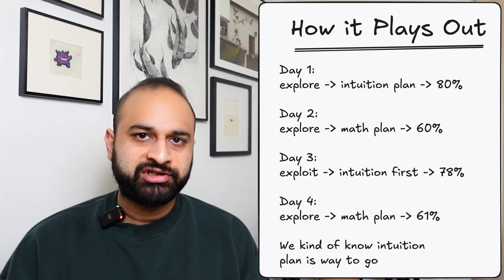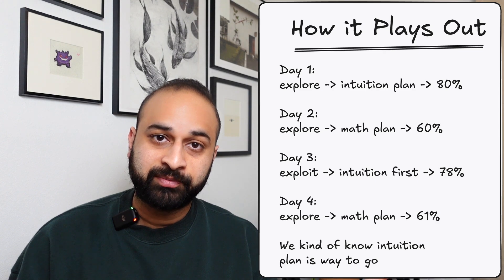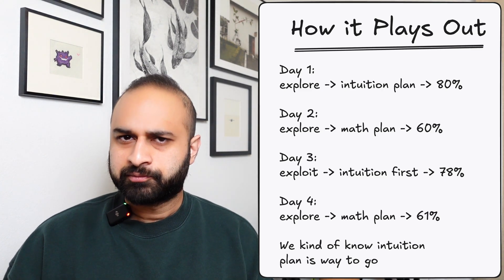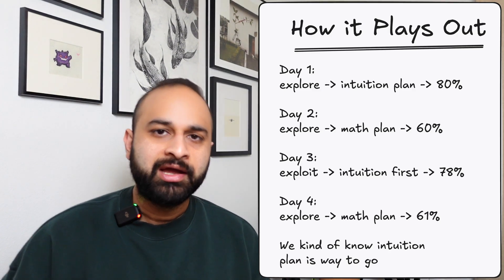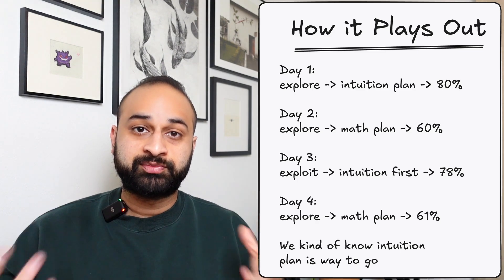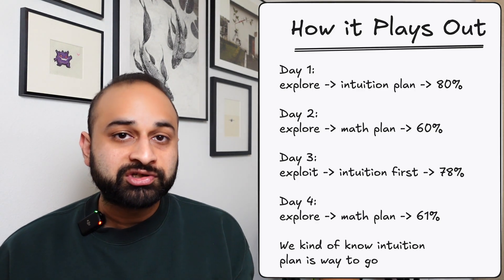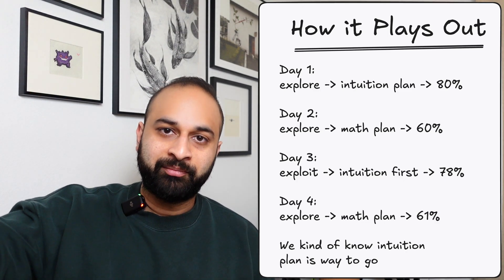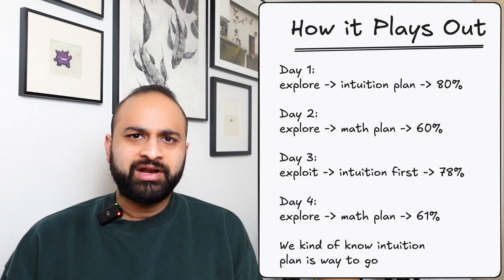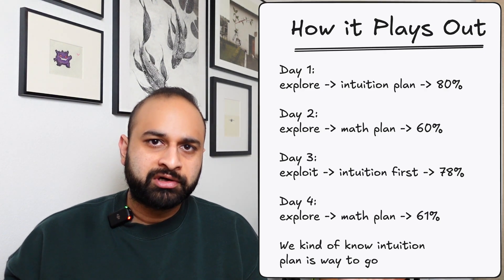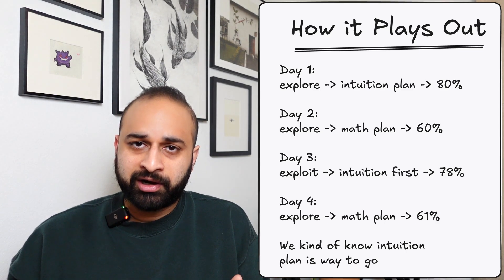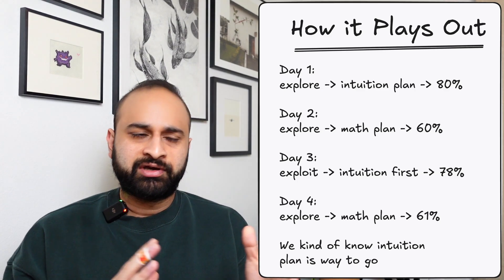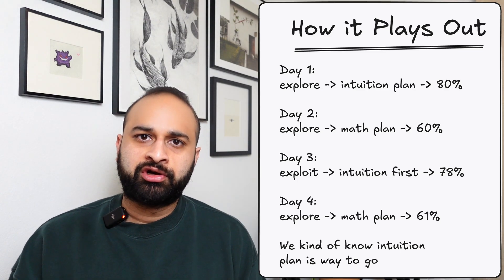The next day your epsilon-greedy strategy tells you to pick the math-based lesson plan. You administer it, take the quiz, and get a 60% average — lower. So when exploiting, you'd pick the intuition plan. The next day you exploit and get 78% with intuition; the day after you explore and get 61% with math. Even after just four days with 100 students, it seems like intuition gives around 80% and math gives around 60%. Sounds like your work is done.